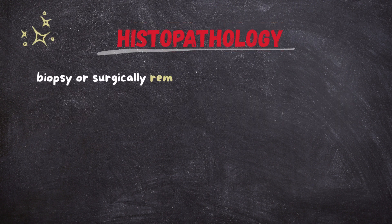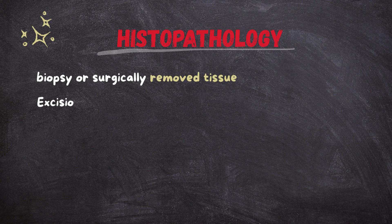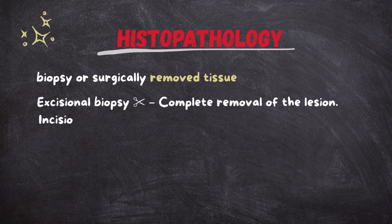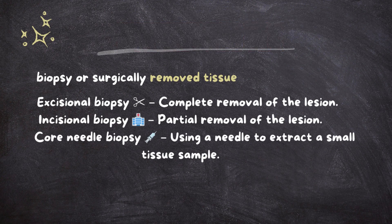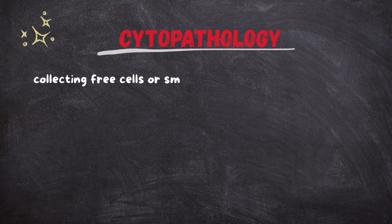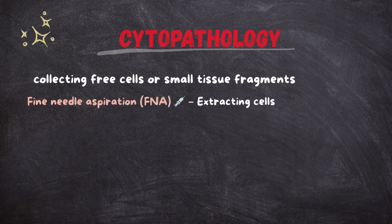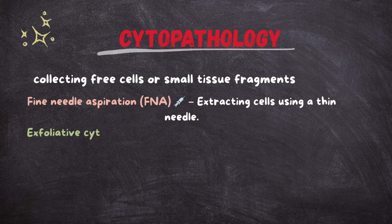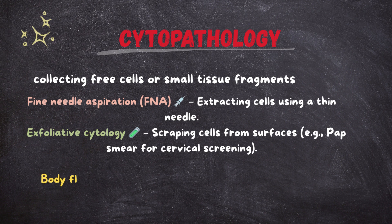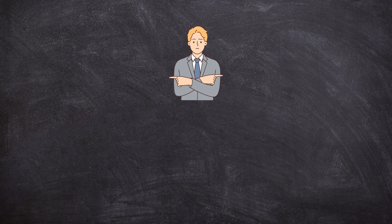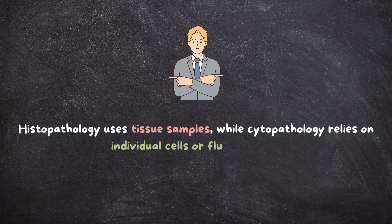Histopathology requires a biopsy or surgically removed tissue sample. Types of biopsies include: excisional biopsy (complete removal of the lesion), incisional biopsy (partial removal of the lesion), and core needle biopsy (using a needle to extract a small tissue sample). Cytopathology involves collecting free cells or small tissue fragments. Sample collection methods include fine needle aspiration (extracting cells using a thin needle), exfoliative cytology (scraping cells from surfaces), Pap smear for cervical screening, and body fluid analysis examining pleural, peritoneal, or cerebrospinal fluids. Key difference: histopathology uses tissue samples while cytopathology relies on individual cells or fluid samples.